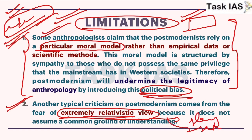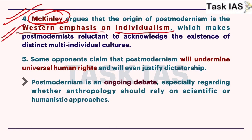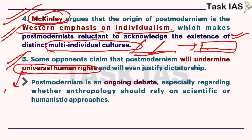Extreme relativism could justify the Sati system or adultery, and these extreme relativist views have negative effects on both society and the discipline. McKinley has argued that this extreme individualistic view stems from a western emphasis on individualism, meaning that multi-individual cultures - ideas of basic personality or model personality found in eastern societies - are not given proper representation in the post-modernist approach. Thirdly, if an excessive relativist view is taken into account, universal human rights will be violated - for example, if someone justifies the Sati system according to their culture using the emic approach, the human rights of that individual will be violated in the name of cultural relativism.